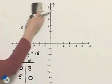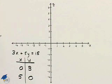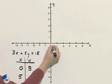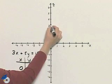And so I have two points now that I can use to graph this equation. 0, 3 is one of those points, and that point is here.